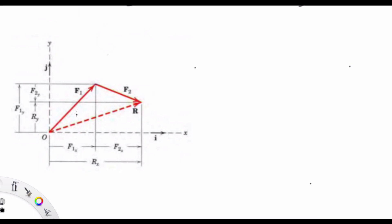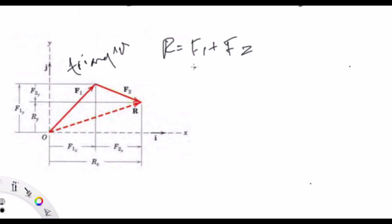For the last typical form of force components: if you want to find Fx, you get Fx equals F cosine (beta minus alpha) and Fy equals F sine (beta minus alpha). Now, for the rectangular component example, if we have two different forces F1 and F2, we use the triangle law to get the resultant R, which is obtained by adding F1 plus F2.